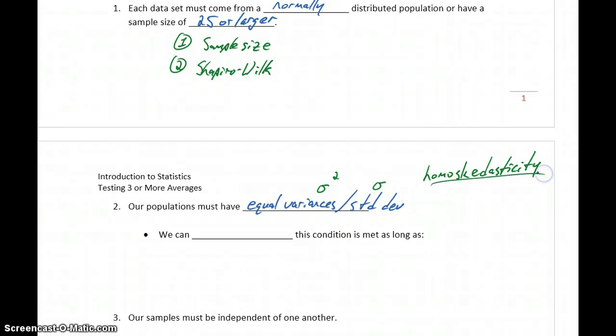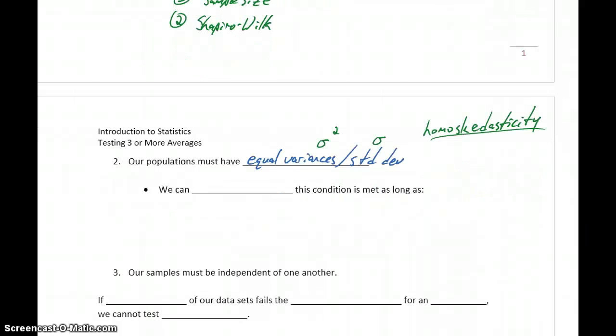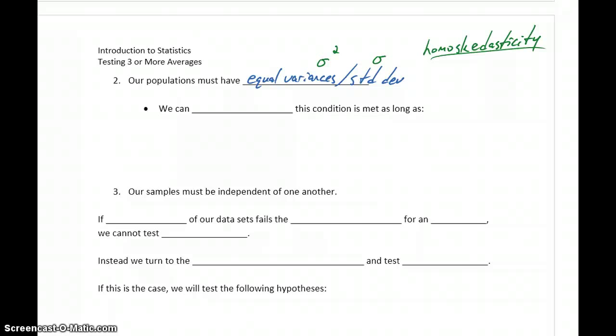Not necessarily an important word for our purposes to keep in mind. But if you're reading reports, if somewhere you're involved with something that's talking about data, and that idea of homoscedasticity is mentioned, it's just coming back to this idea of each of our populations having equal variances or equal standard deviations.